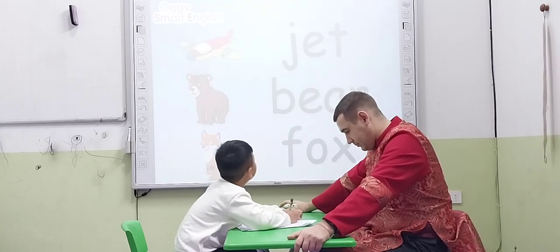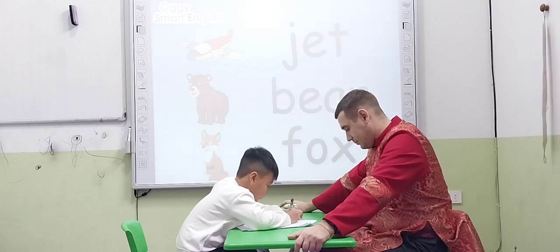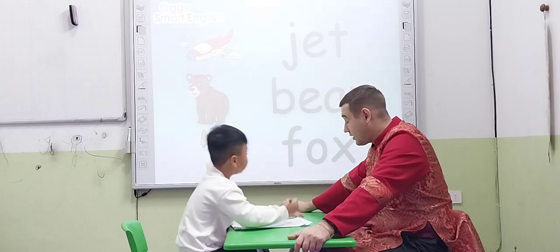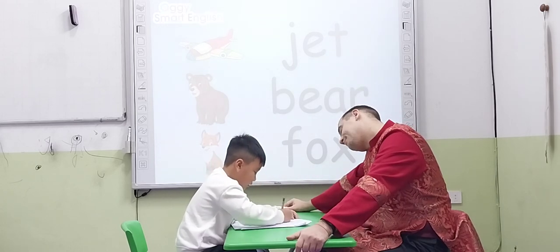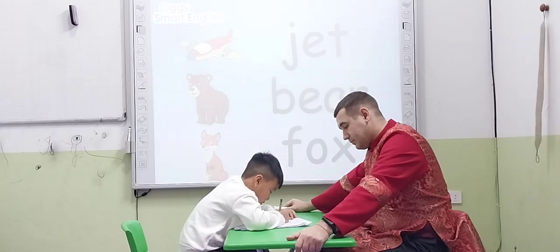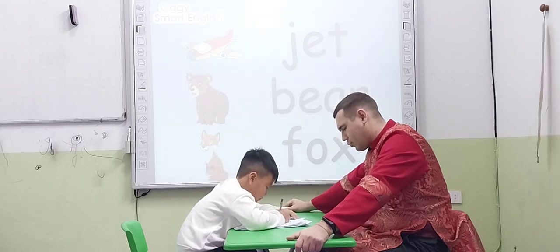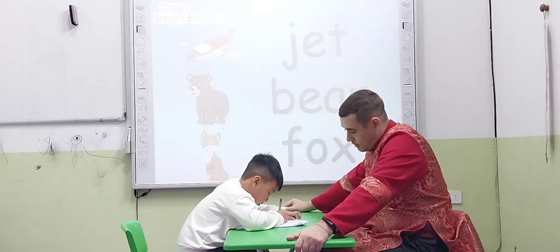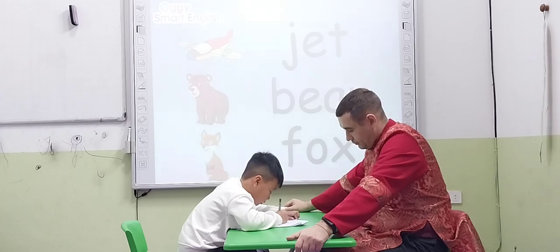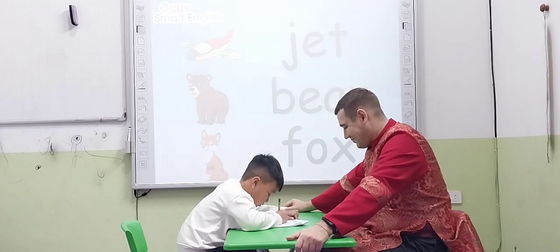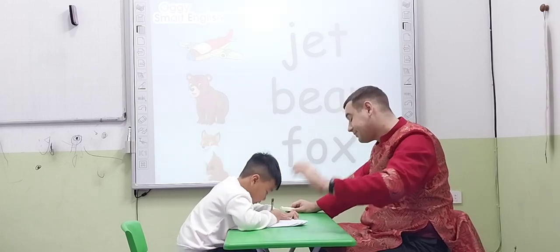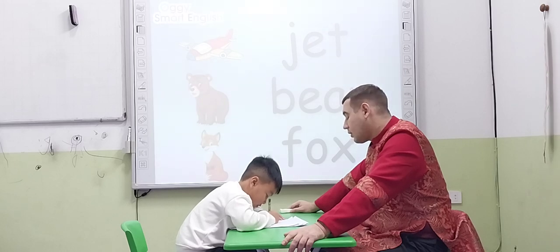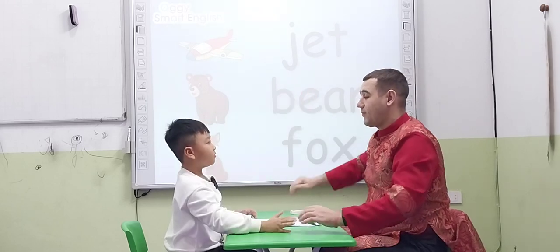Start with jet. Jet. It's a J. J. Yeah. E. E. T. Yes, very nice. The next word is bear. Let's do bear. B, E, A. Yes, you're right. This letter is R. Okay, very good. And the last one, word fox. Fox. Yes. Okay, very nice. Thank you very much Eric. Give me a high five. Goodbye my friend. Goodbye teacher.